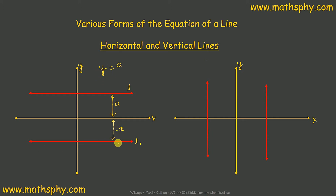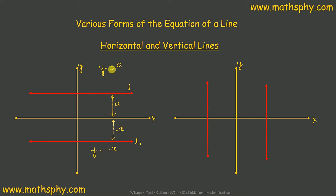The same is applicable to line l1 below the x-axis. For all x-values, the y-value will always be negative a. So the equation of that line is y equals negative a. For a horizontal line on the positive side, the equation is y equals a; for a horizontal line on the negative side, the equation is y equals negative a.